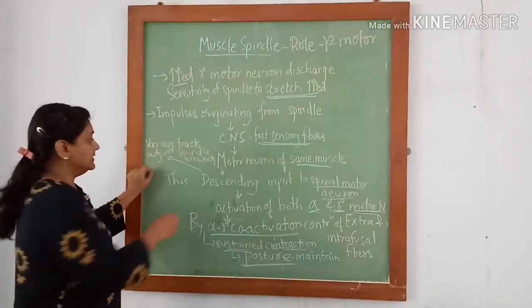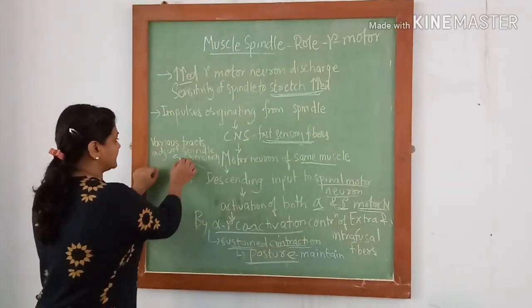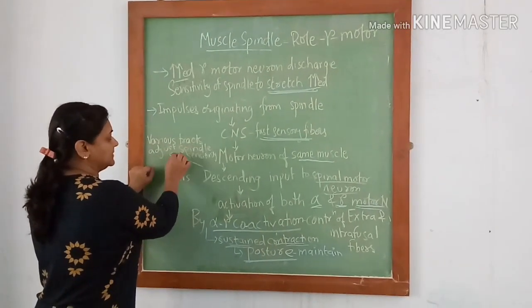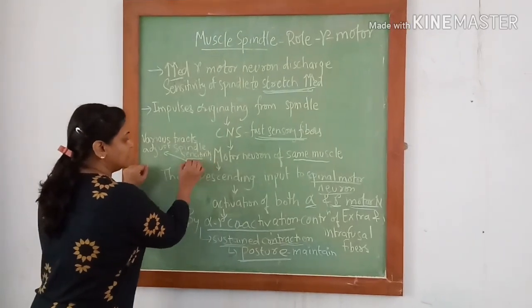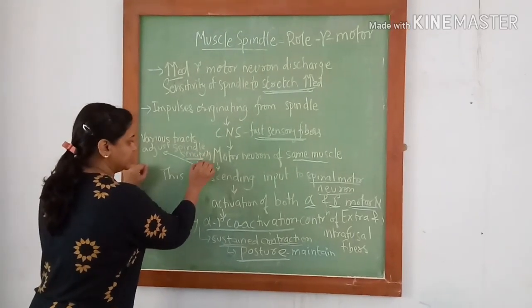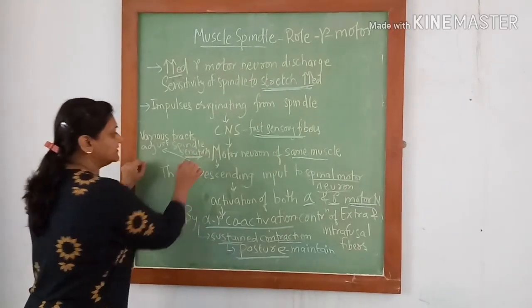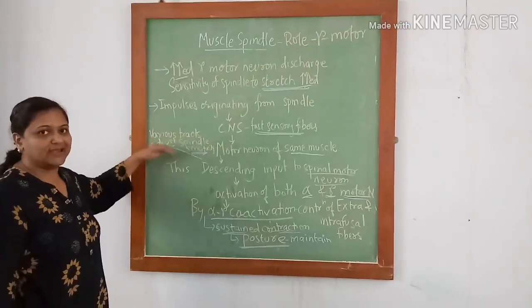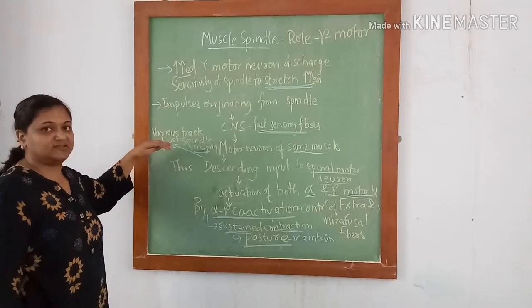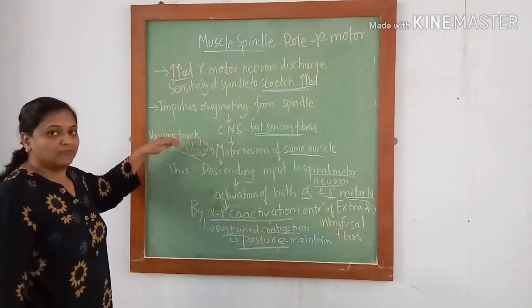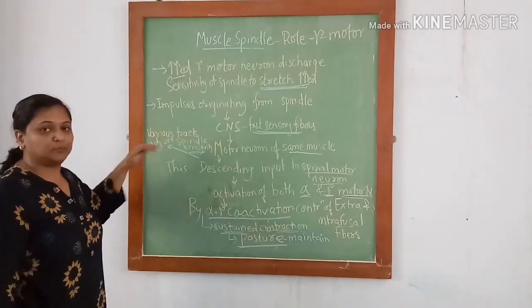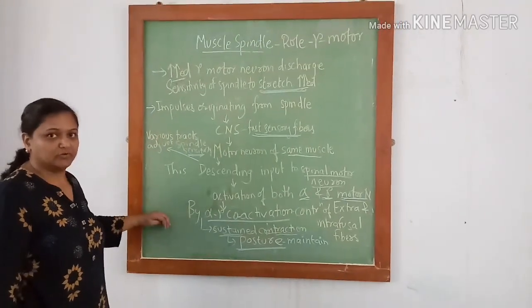The signals from various areas of the brain adjust the spindle sensitivity and thus help in adjusting the stretch of the spindle for various postural controls.